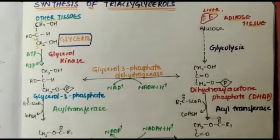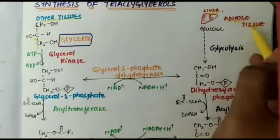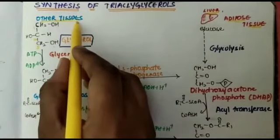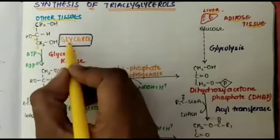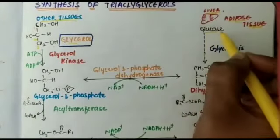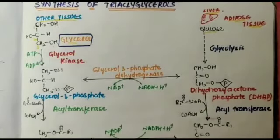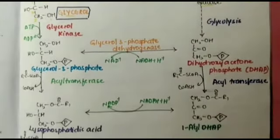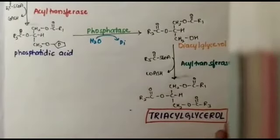The synthesis of triacylglycerols takes place in the liver, adipose tissue, and some other tissues. The precursors of triacylglycerols are glycerol, glucose, and some other fatty acids. If you see the structures of glycerol and triglycerides, we can see that the three OH groups are replaced by three acyl groups.